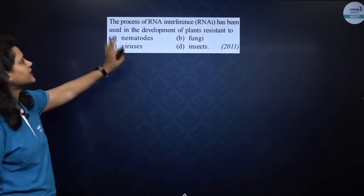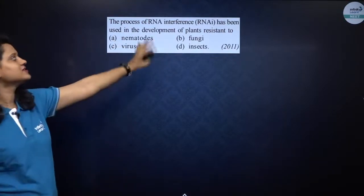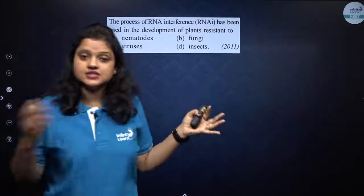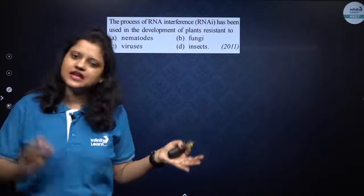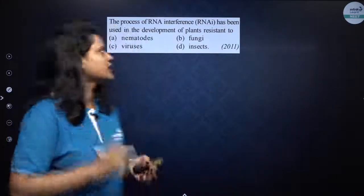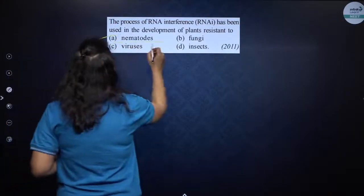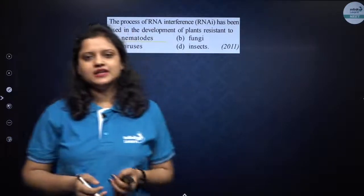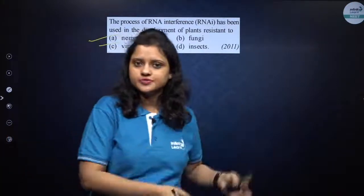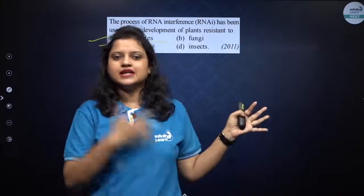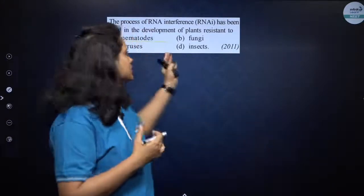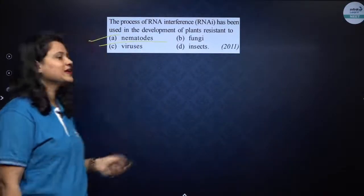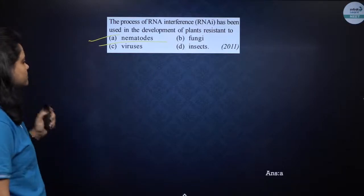The process of RNA interference has been used in the development of plants resistant to which organism? Tobacco plant was made resistant to Meloidogyne incognita, which is a nematode — a roundworm. Earlier, tobacco plants had root nodules because of this parasite and lower yield. After RNA interference was introduced, there were no root nodules. The correct option is A — nematodes.